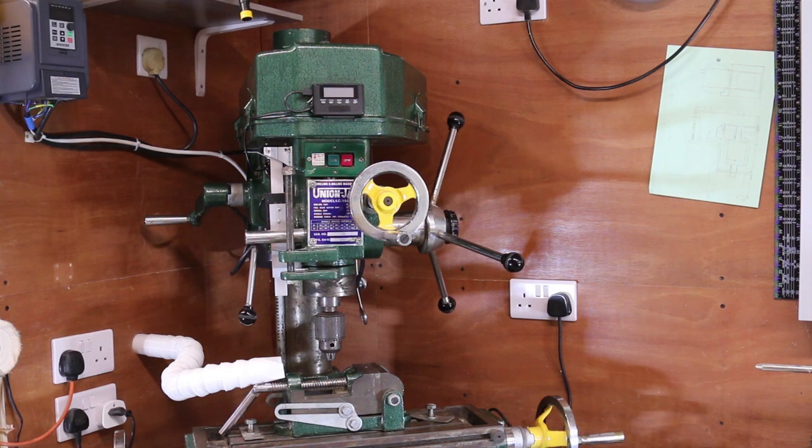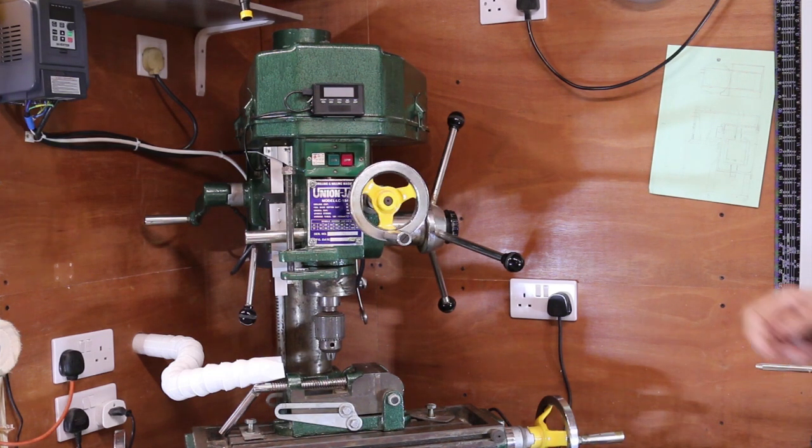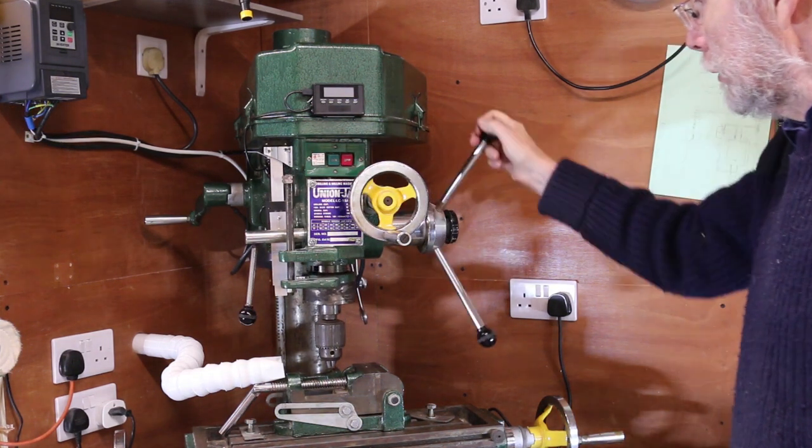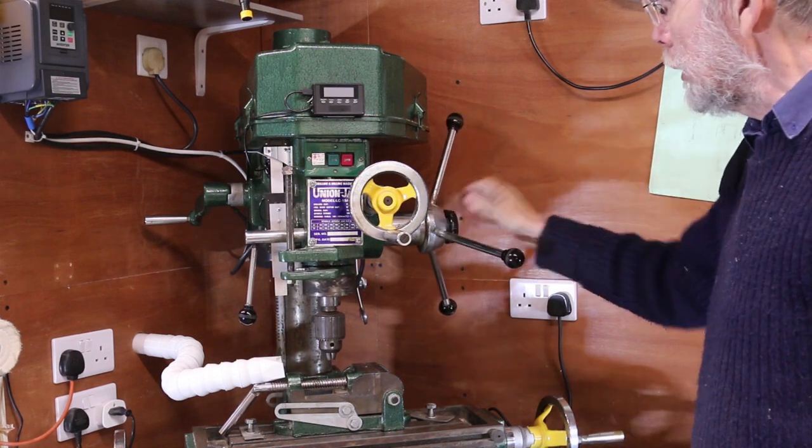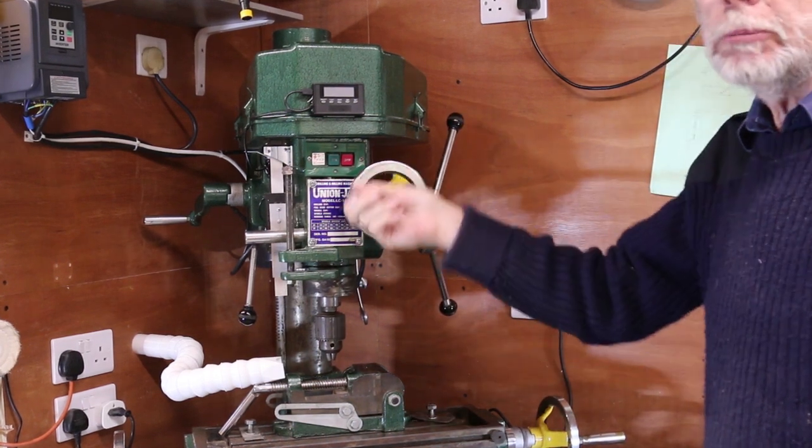It has the functions of both the drill and the milling machine. As a drill you turn the wheel in the normal way, but if you engage the clutch you can use the hand wheel for fine adjustment.